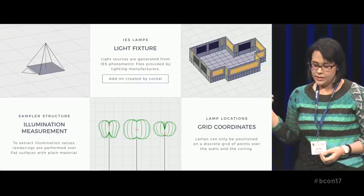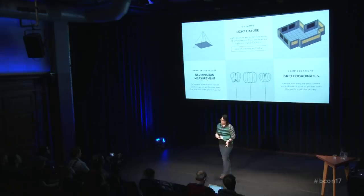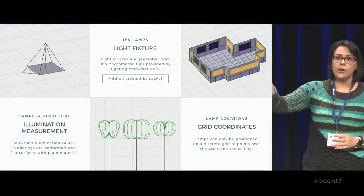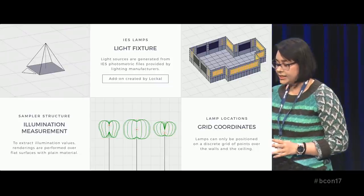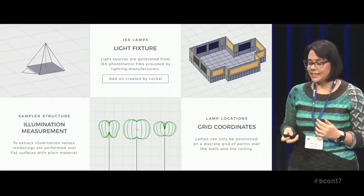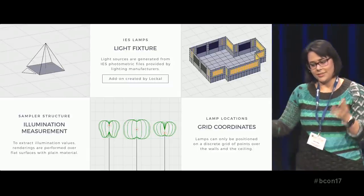In order to apply this tool to real-world problems, the lamps illuminating the environment have to represent actual commercial light fixtures. That's why light sources are generated from IES photometric files provided by the manufacturers. Since Blender still doesn't fully support IES lamps yet, I use the add-on created by Loka. Lastly, in the design process, there are some constraints on lamp placement — for example, in areas corresponding to windows, doors, pillars, and so on. That's why I decided to place lamps only on a discrete grid of points over the walls and the ceiling using vertex groups. Of course, there is space for improvement, and any suggestions are very welcome.